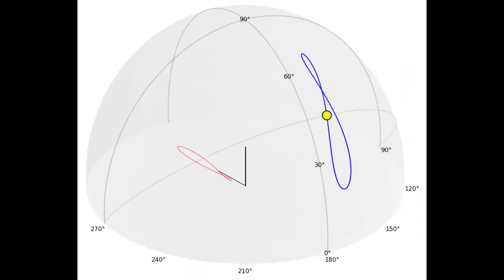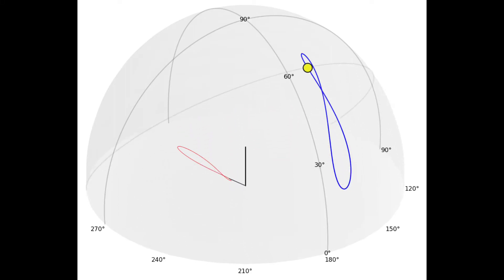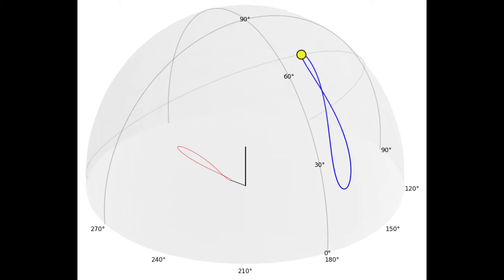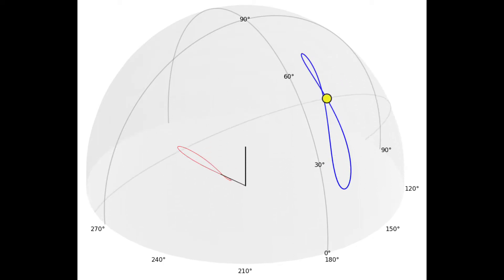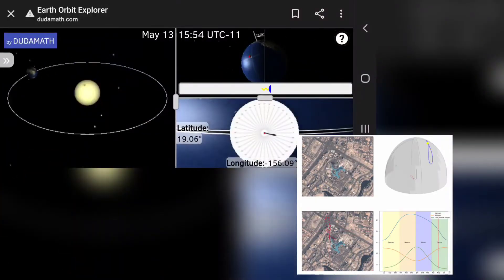To demonstrate this, go outside and put a stick in the ground. Mark the position at the end of the shadow that the stick makes. Do this every single day at the same exact time and you'll notice that the position changes day after day. The resulting figure eight pattern is a result of two factors.